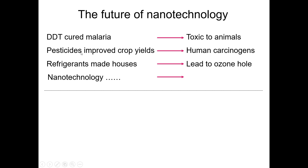Similarly, we have pesticides that improve crop yields, but it has been found that most of these pesticides are human carcinogens. Similarly, we have refrigerants that made houses comfortable, but that led to the ozone hole.